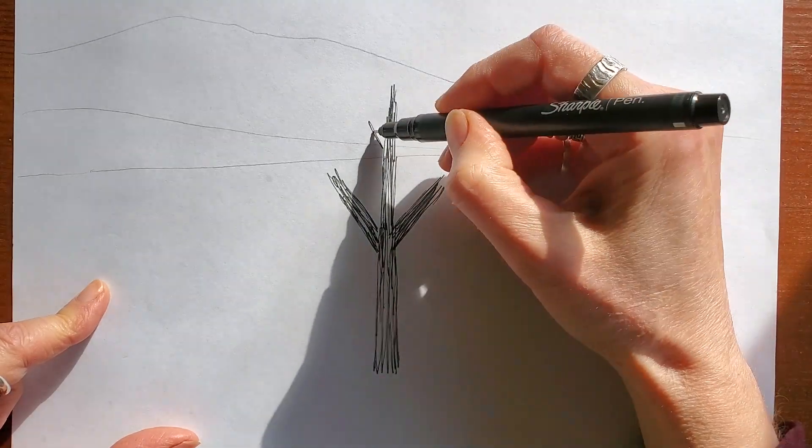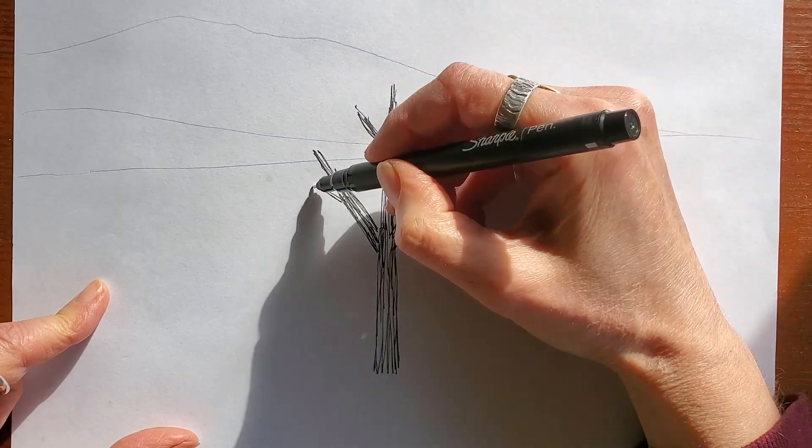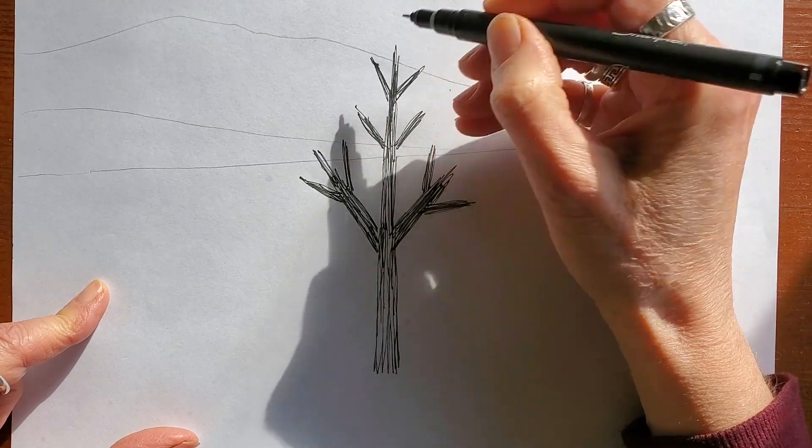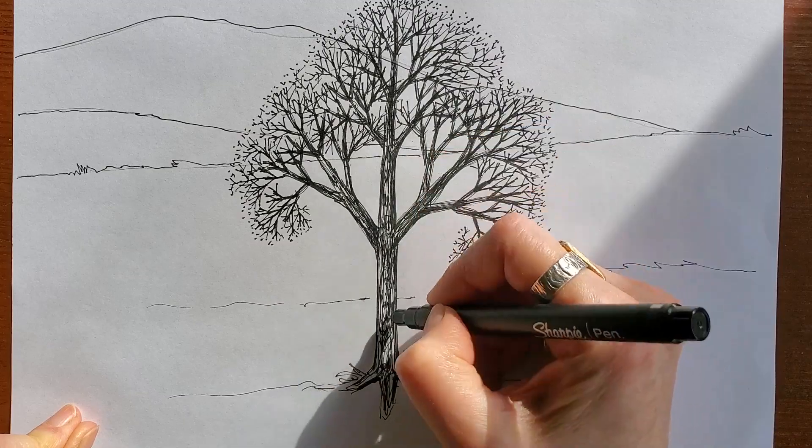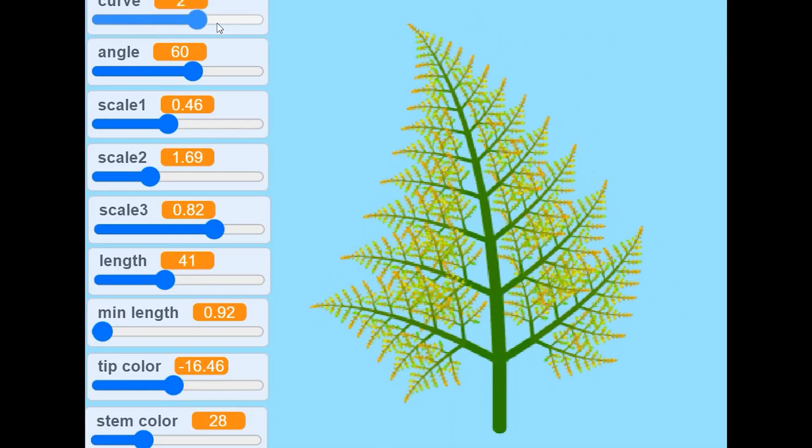Try drawing this simple branching structure at smaller and smaller scales. One variation of that pattern creates a tree. Another one creates a fern.